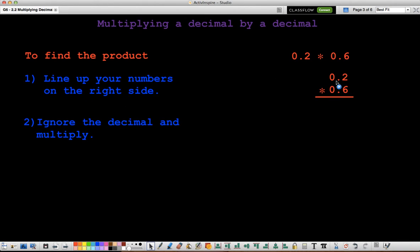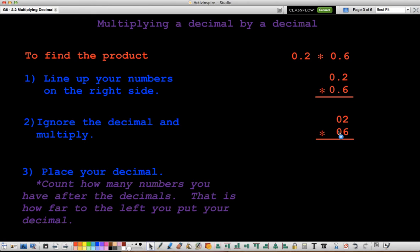So after you line up your numbers on the right side, we ignore that decimal and we multiply. So your problem ends up looking like this. Now, you don't literally have to show this step. I just want you to understand that we ignore the decimals as we're multiplying.